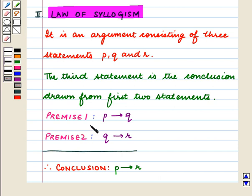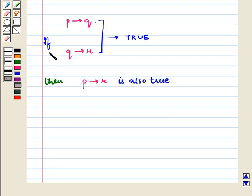Premise 1 is P implies Q. Premise 2 is Q implies R. Therefore the conclusion is P implies R. If P implies Q and Q implies R are true, then P implies R is also true.